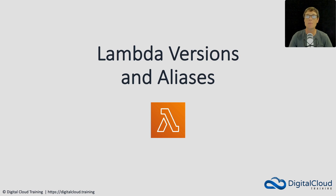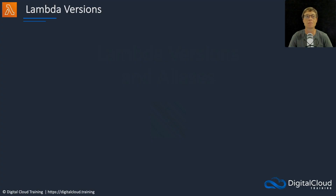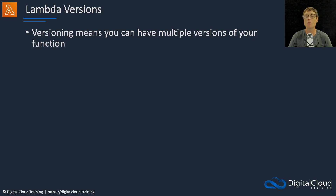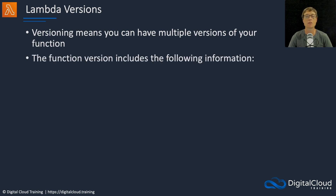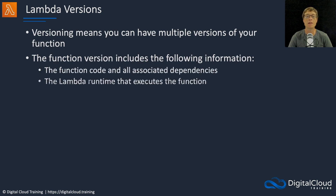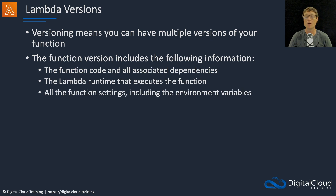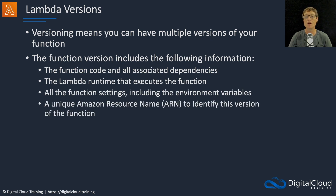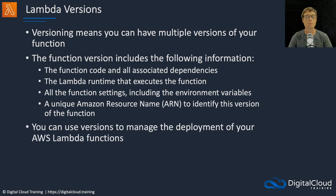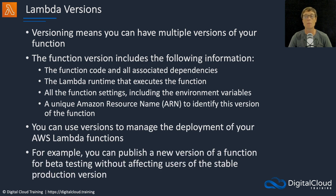In this lesson we're going to look at Lambda versions and aliases. Versioning means you can have multiple versions of your Lambda function. The function version includes the function code and all its associated dependencies, the Lambda runtime that executes the function, and all the function settings including the environment variables. It also includes a unique Amazon Resource Name, the ARN, to identify the specific version of the function. You can use versions to manage the deployment of your Lambda functions — for example, you can publish a new version of a function for beta testing without affecting users of the stable production version.